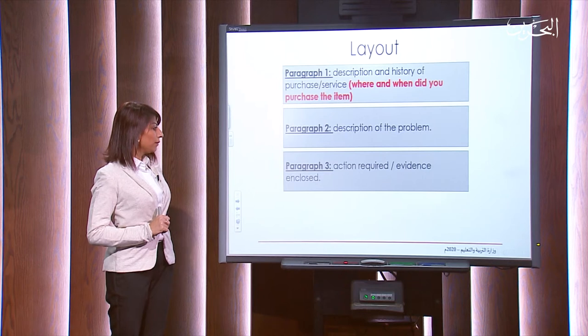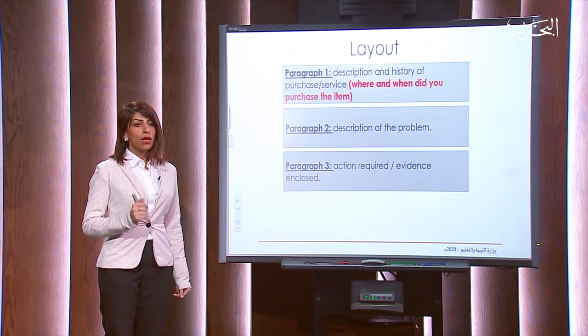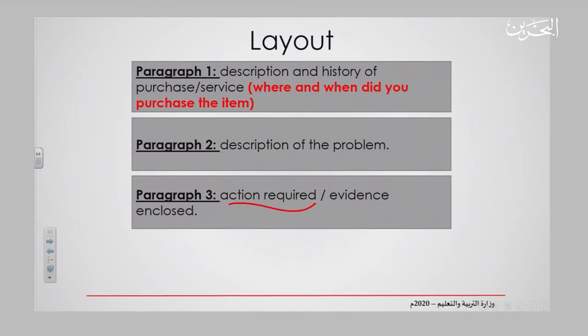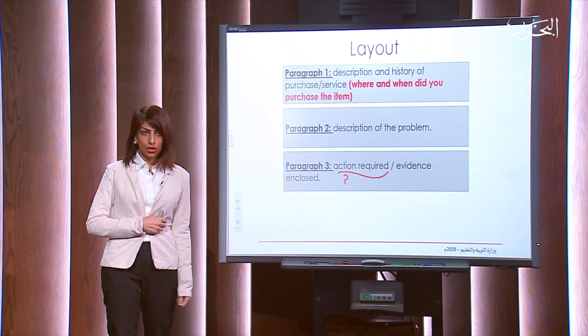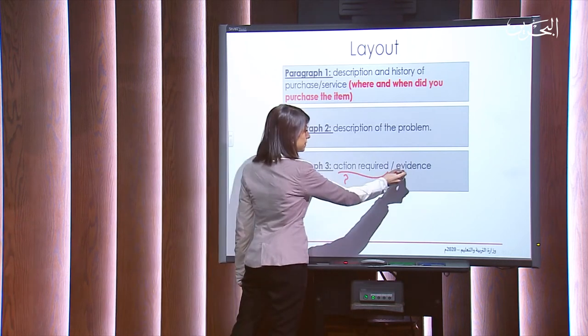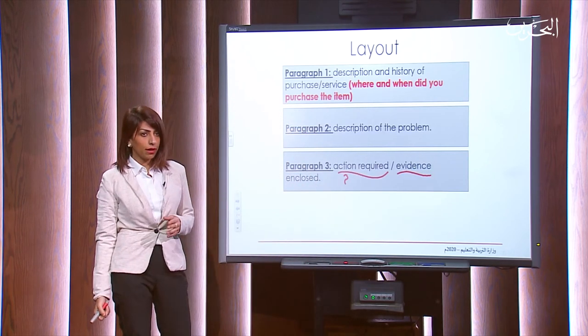Let's move to paragraph three. Here you need to tell the receiver what your demand is — the action required. What do you want exactly? Do you want a refund, the cash back, or do you want to exchange the item? Whatever makes you satisfied, you should tell the shop or the place you are writing to. Also, you have to enclose evidence. If you made a purchase online, you have a receipt showing the purchase details. If you made an online shopping from a social media application, you have a chat. Any type of evidence you have, enclose it along with the letter.